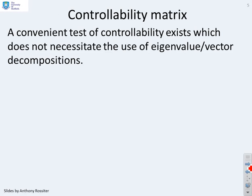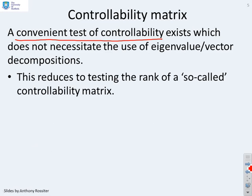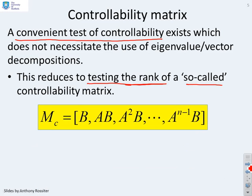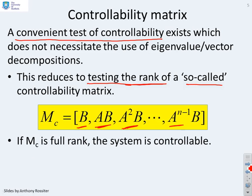What we need to do now is come up with a convenient test of controllability, because using eigenvalue eigenvector decompositions is not convenient. What we'll find is that you can test for controllability by testing the rank of a so-called controllability matrix. The definition of this is very simple. The controllability matrix M_c equals [B, AB, A²B, ..., A^(n-1)B] where A and B are the state-space parameters and n is the number of states. If this matrix is full rank, then the system is controllable. And obviously if it's not full rank, the system is not controllable.